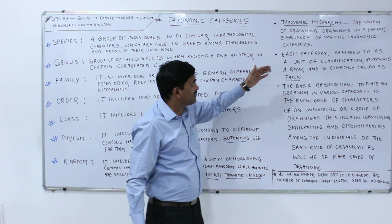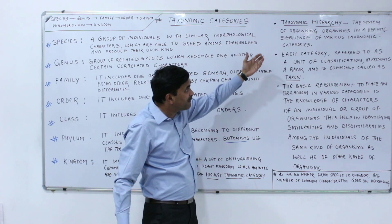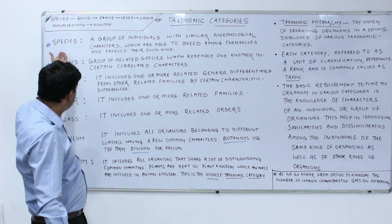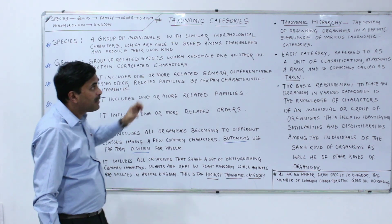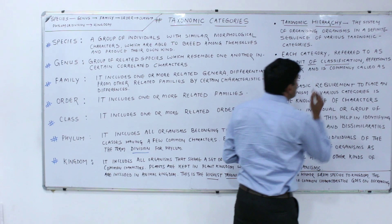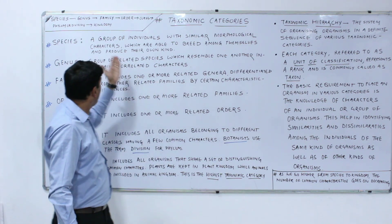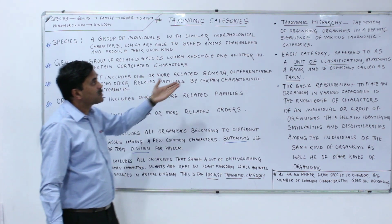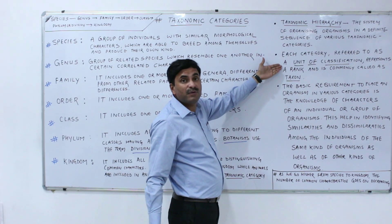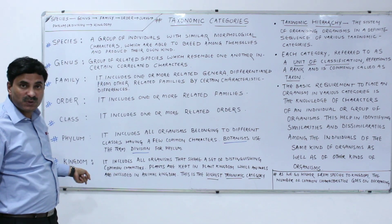Each category — whether it is species, genus, family, order, class, phylum, or kingdom — is referred to as a unit of classification. It represents a rank and is commonly called a taxon. So all of these — species, genus, family, order, class, phylum, and kingdom — are taxons.